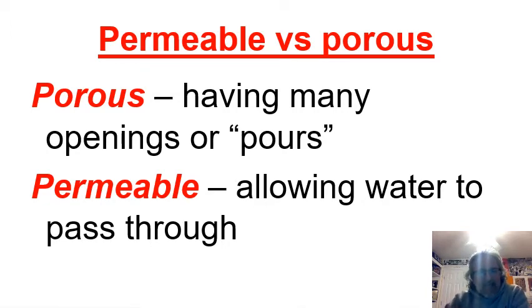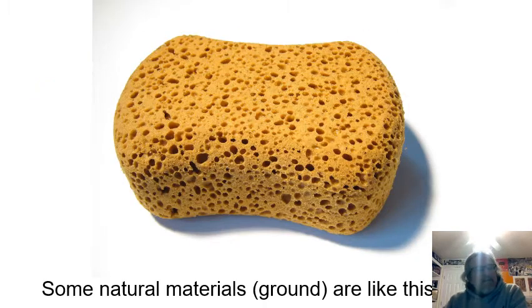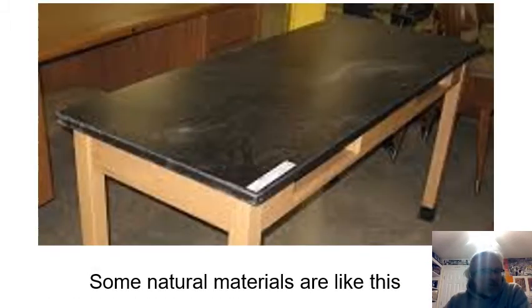Ground that is porous has many openings — pores — and water can get in there because it's got a lot of space. Being permeable means that you allow water to pass through easily. If you think about biology, you remember the permeable or semi-permeable membrane — something that lets things pass through. Some natural materials look like a sponge: a sponge has a lot of pores, holds a lot of water, and is highly permeable — water goes straight into a sponge right away.